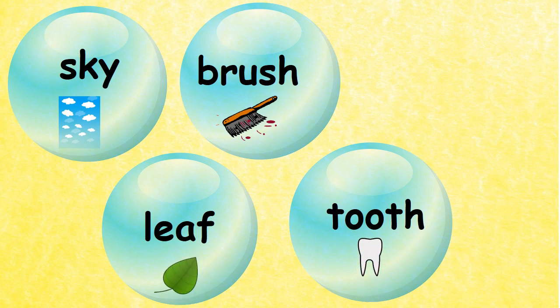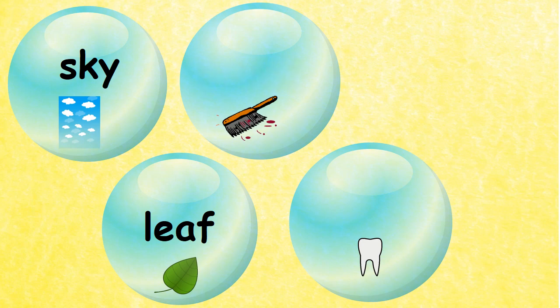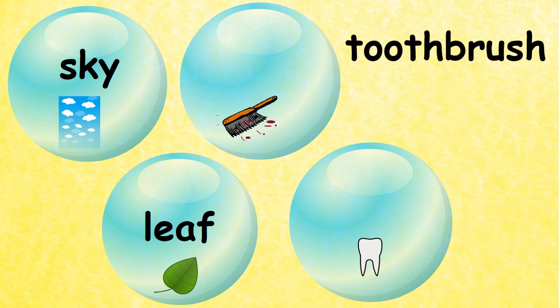We have sky, brush, leaf, and tooth. Which of these two root words are we going to use to make a compound word? We will use tooth and brush, and this will give you toothbrush.